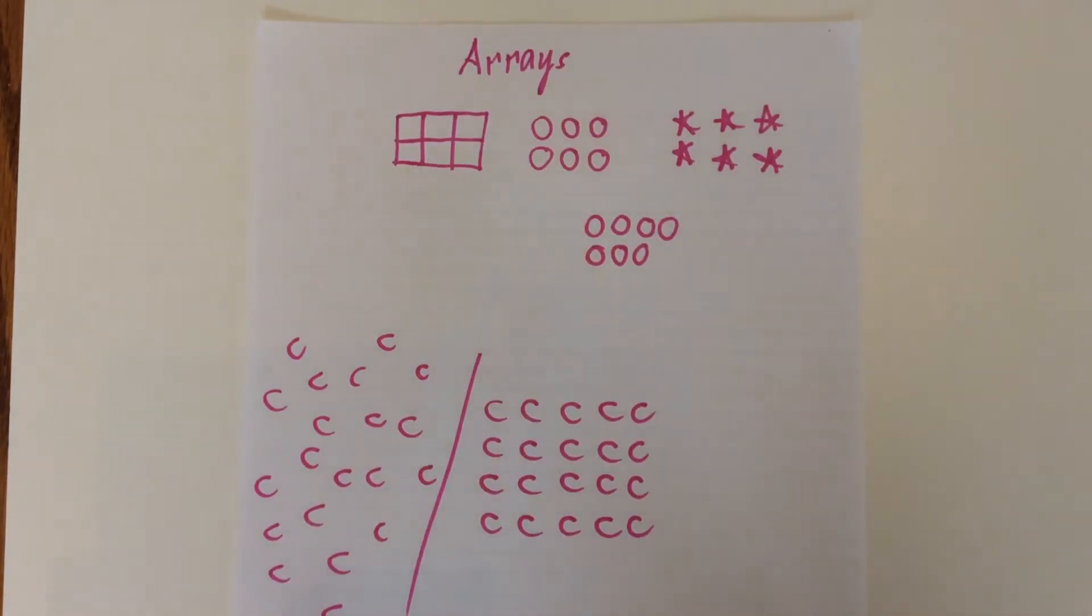Okay, this video is on arrays. Arrays are groups of objects that make a rectangle. There are equal numbers of objects in each row of the rectangle. It helps with multiplication and also will be helpful with division when we get to it.